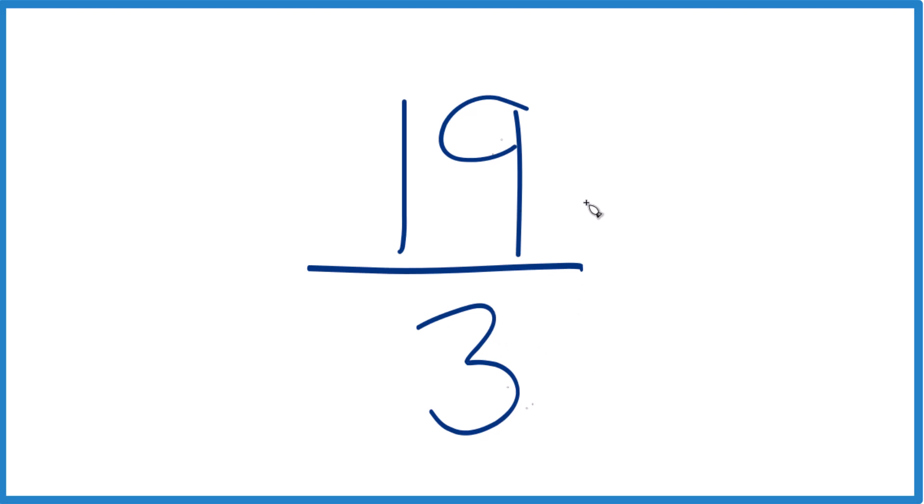But the only number that goes into both 19 and 3 evenly is 1. So if we divide the numerator by 1 and the denominator by 1, we end up with 19 thirds again. That means that this fraction here, it's already simplified. We can't reduce it any further.